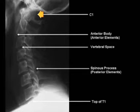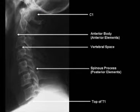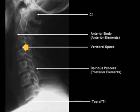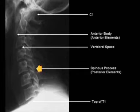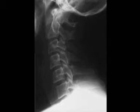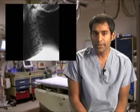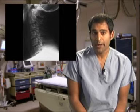In this normal cervical spine series, notice C1 and the top of T1 is visible. With that, one can see the three columns: the anterior elements in the anterior body, the vertebral space, the middle elements, and finally the spinous processes comprising the posterior elements. In this example, you do not see the top of T1, therefore this would not be considered an adequate lateral C-spine.